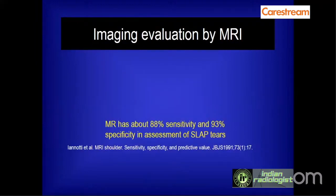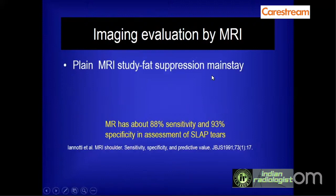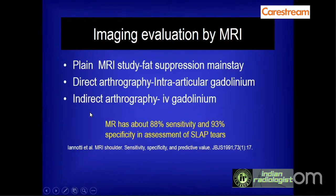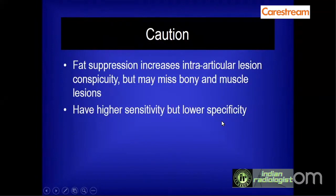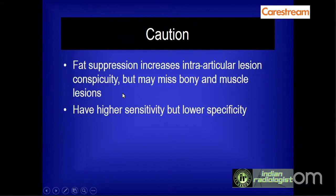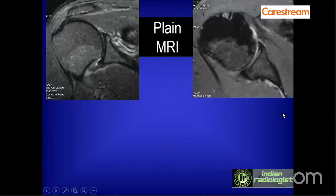Imaging of these lesions is done either by plain MRI scan, positive contrast arthrography, or indirect arthrography by giving intravenous gadolinium. When using fat suppression as a mainstay of plain MR imaging, although it increases intra-articular lesion conspicuity, it can miss bony and muscle lesions. Therefore, fat-suppressed images should always be supplemented by routine T1 and T2-weighted images. Fat-suppressed sequences have higher sensitivity but lower specificity.